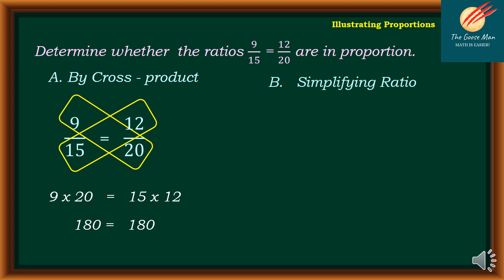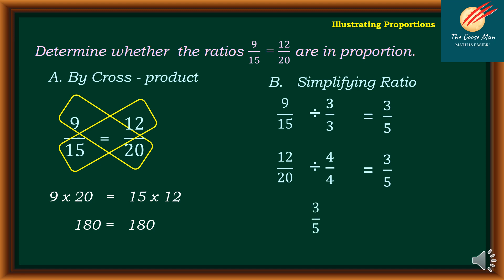The second method is what we call simplifying ratios. If I have 9 over 15 and the greatest common factor is 3, divide both the numerator and denominator by 3, so I have 3 over 5. On the other hand, 12 over 20 has the greatest common factor of 4, so divide by 4, giving 3 over 5 as well. Clearly, 3 over 5 is equal to 3 over 5, so therefore it is a proportion.